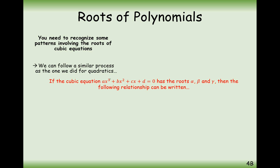So if the cubic equation ax³ + bx² + cx + d = 0 has roots alpha, beta, and gamma — gamma being the third letter of the Greek alphabet — then the following relationship can be written. We have ax³ + bx² + cx + d equal to a(x − α)(x − β)(x − γ). We put the a at the front because it could be something like 3x³ or 2x³, in which case we'd need a number there.